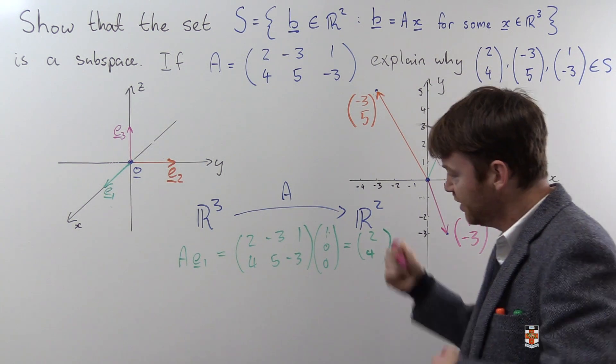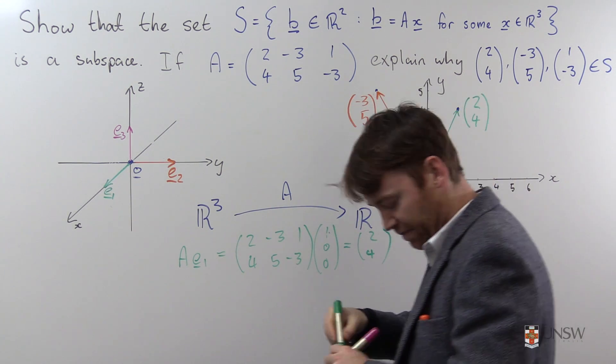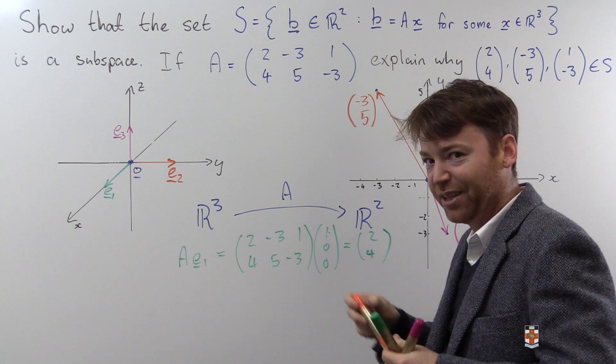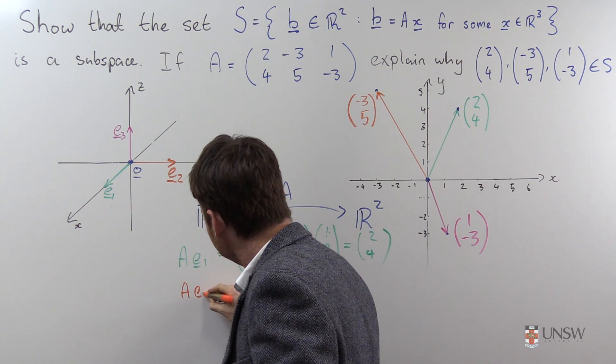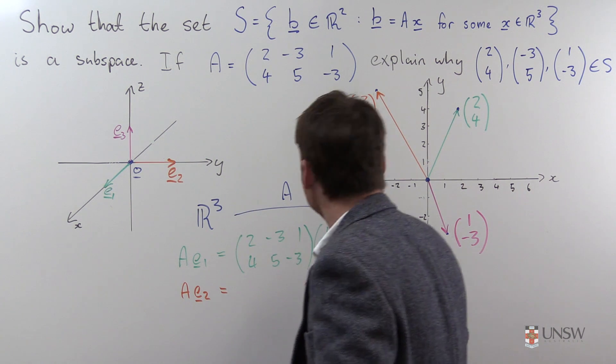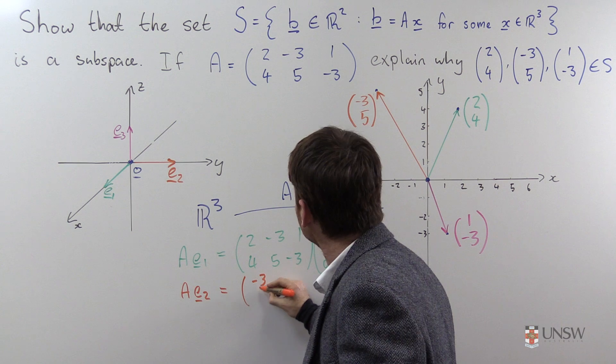Similarly, A E2 is equal to the second column, negative 3, 5.